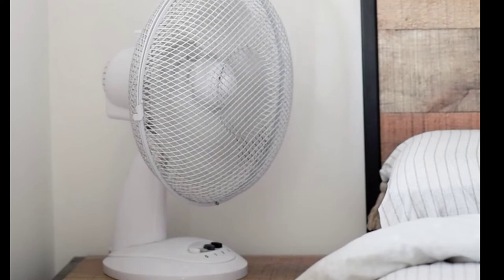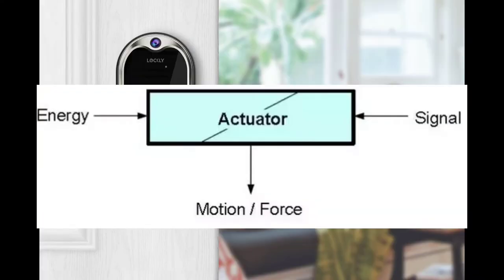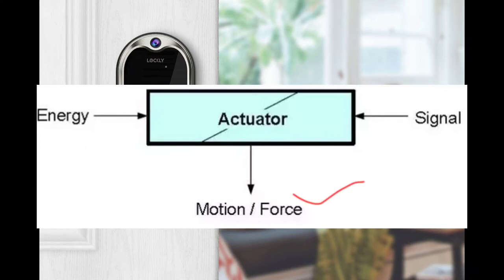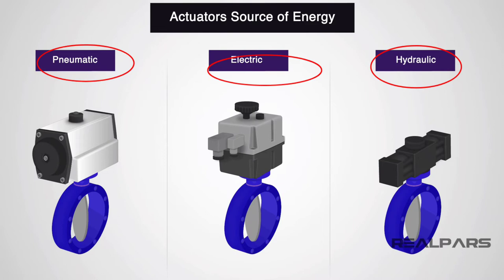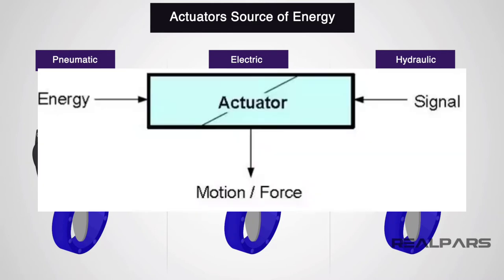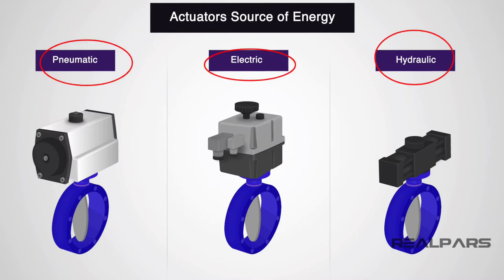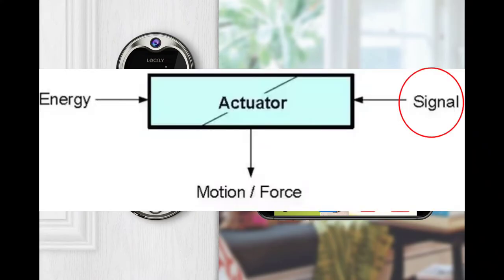The control system acts upon an environment through the actuator. It requires a source of energy and control signals. When it receives a control signal, it converts the source of energy into a mechanical operation. The source of energy may be hydraulic, pneumatic, or electrical. As shown in this diagram, any type of energy — whether hydraulic, electrical, pneumatic, or magnetic — is fed to the actuator, and the actuator converts that energy into mechanical force.